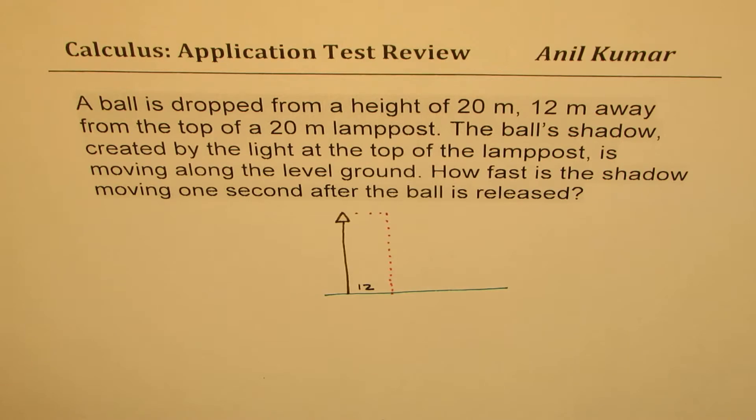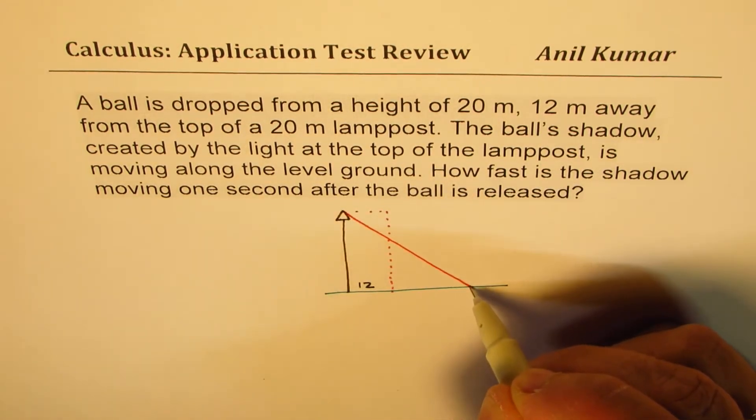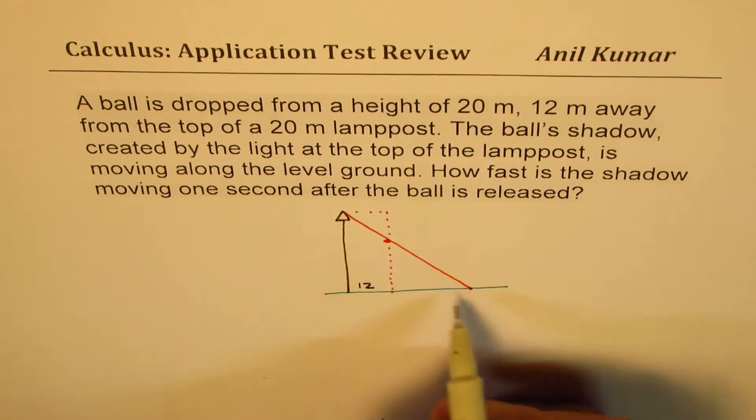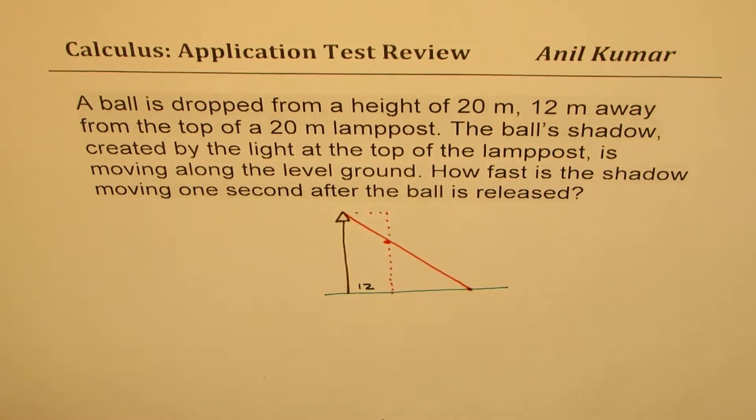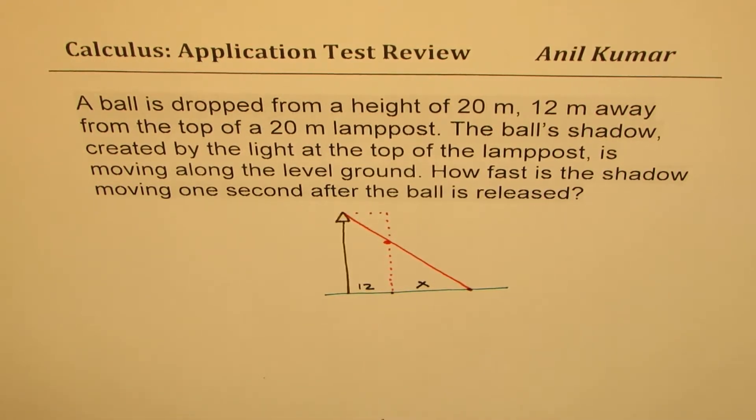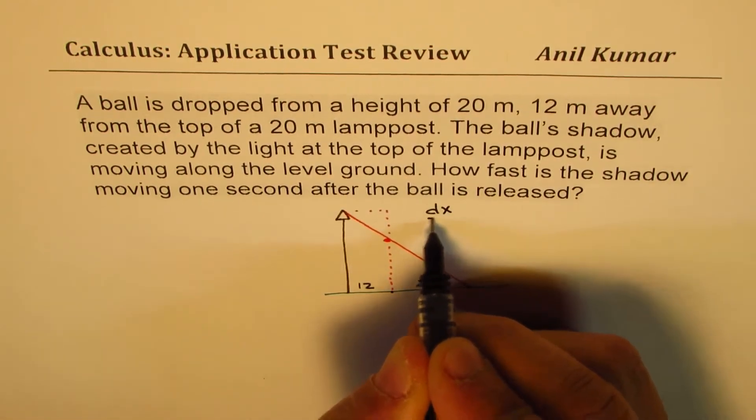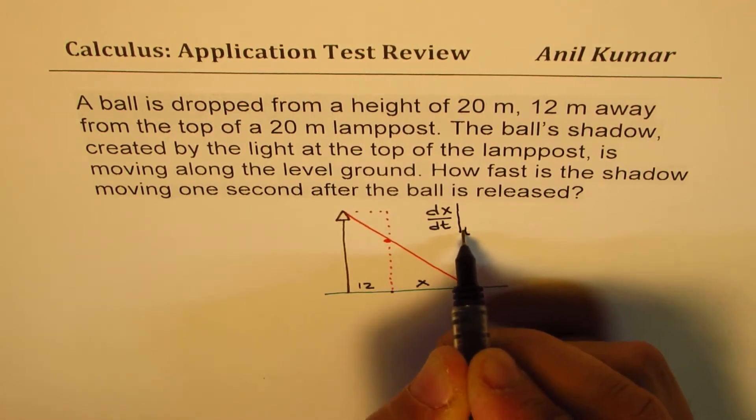And as it is dropped, you'll find that the shadow of the ball will be seen on the ground. If the position of the ball is here, that is going to be the position of the shadow. Now let us call this length from that place to this as x. We need to find the rate of change of shadow with time when t is 1. That means we have to find dx/dt when t equals to 1.